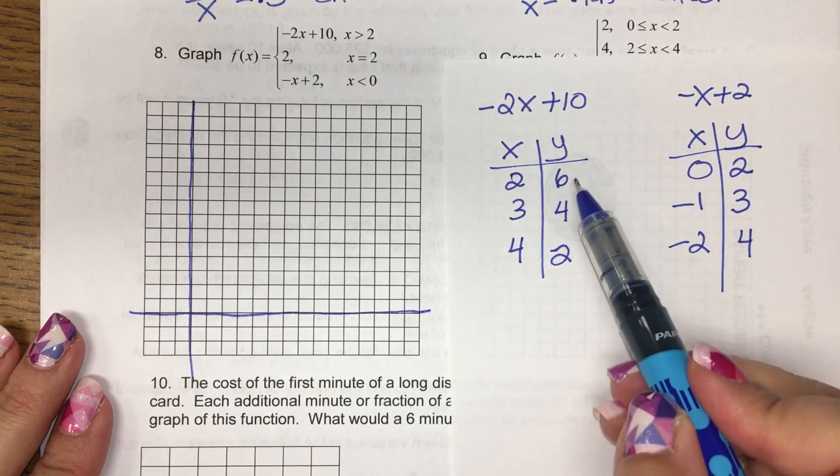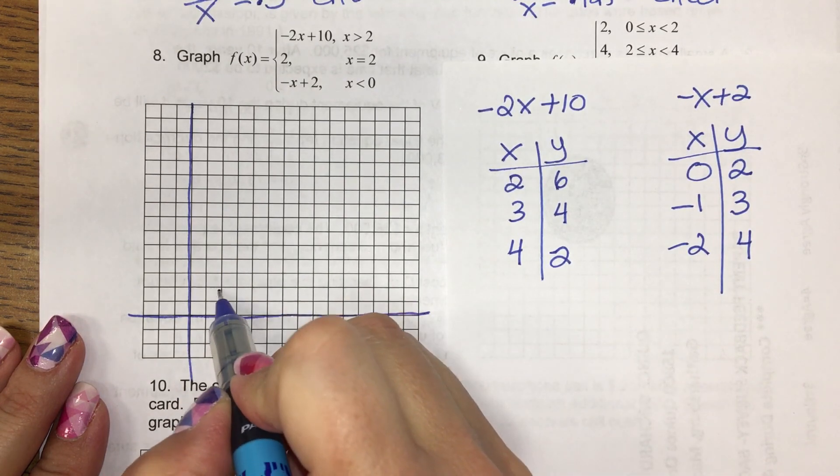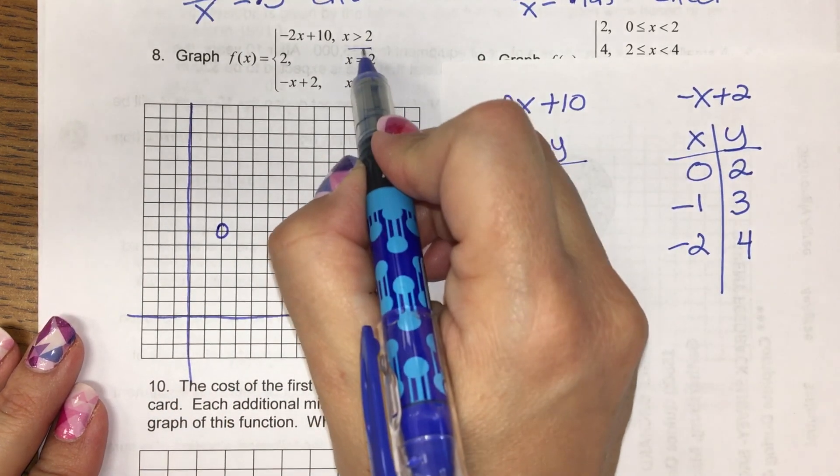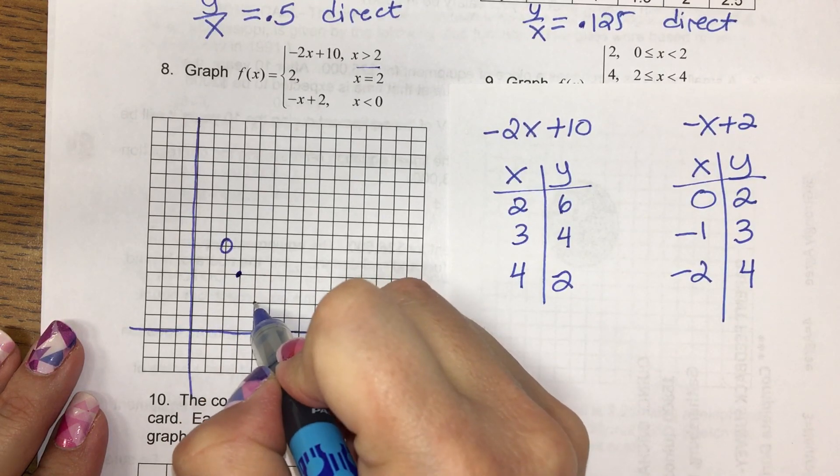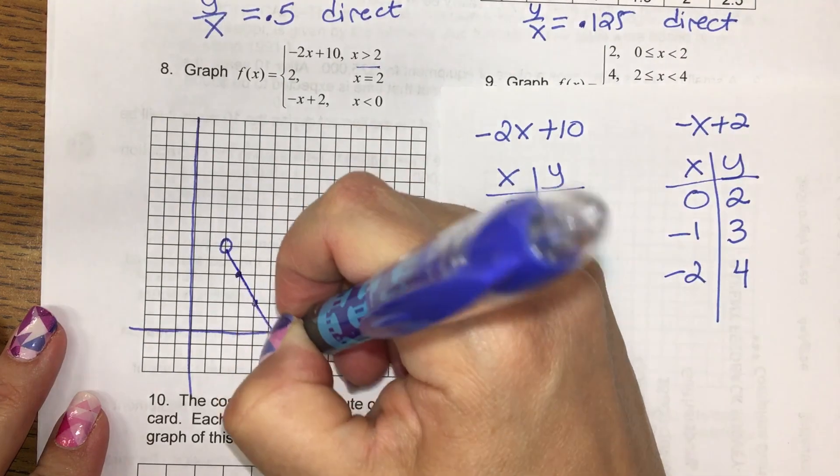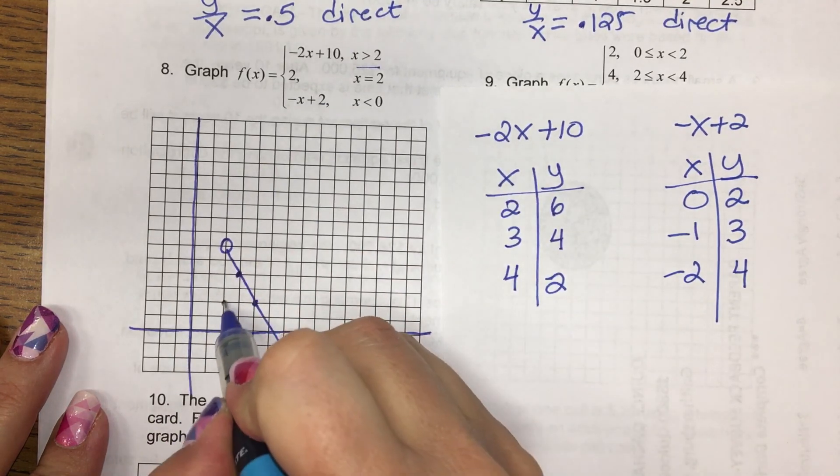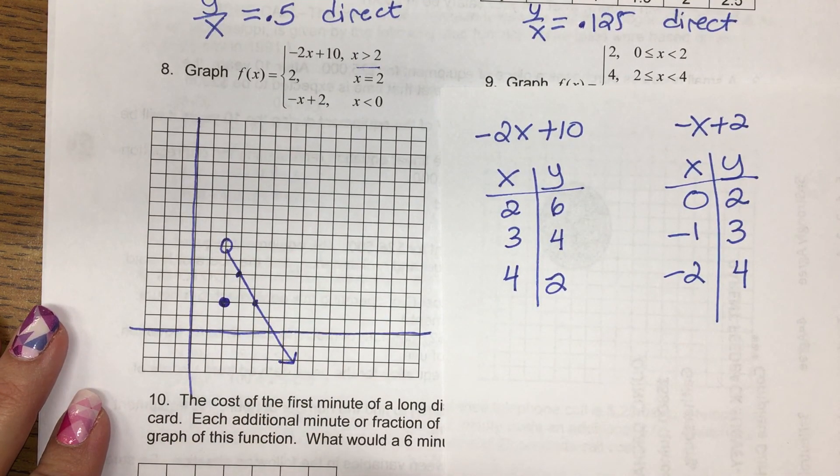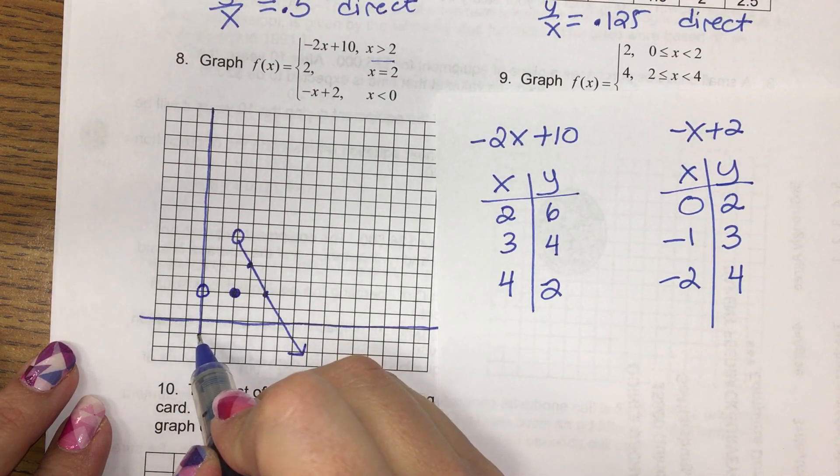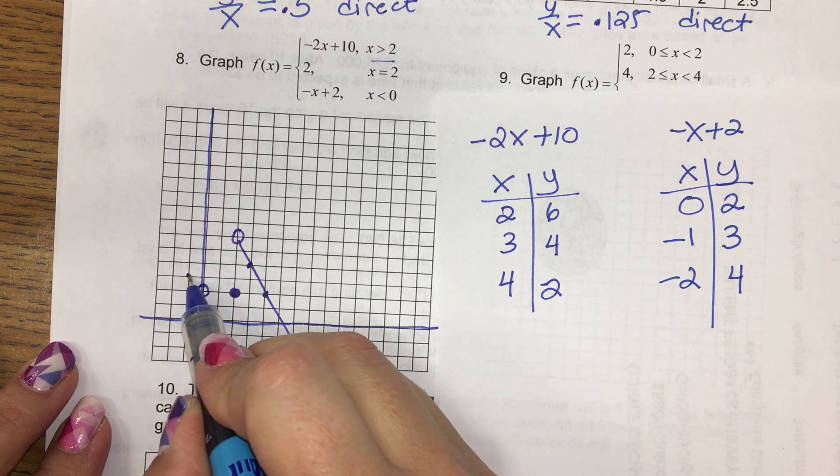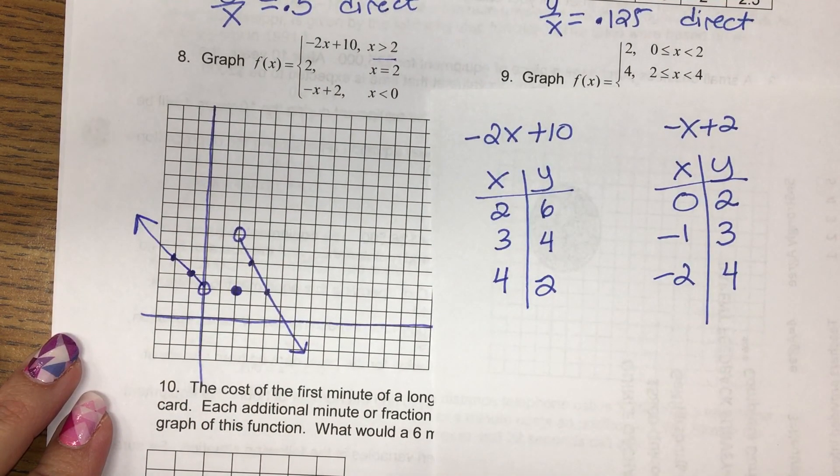So let me get a grid here. All right, so for this first ray, we're going to go to 2, 6. But that's going to be an open circle because it's not or equal to. It just says greater than. And then we'll go to 3, 4. And so we get this ray going down to the right. Then at 2, we have a y value of 2. So that's a dot. And then less than 0. Oh, I should have given myself more space over here. We go to 0, 2, and that's an open circle. Negative 1, 3. And we get this ray going up to the left.